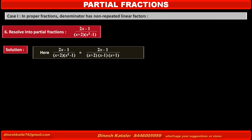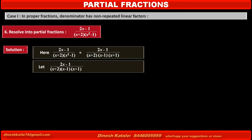By taking three numerators A, B, and C for factors x plus 2, x minus 1, and x plus 1 as denominators, we get: let the given fraction 2x minus 1 upon (x plus 2)(x minus 1)(x plus 1) be equal to A upon (x plus 2) plus B upon (x minus 1) plus C upon (x plus 1).